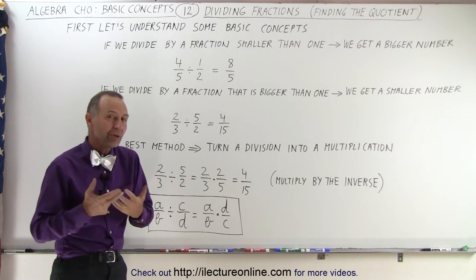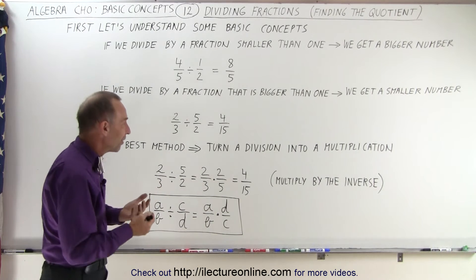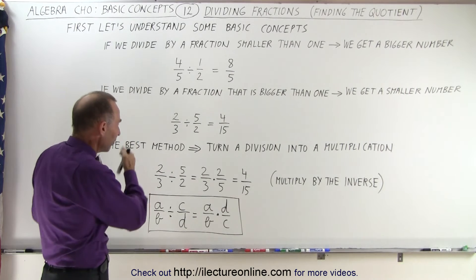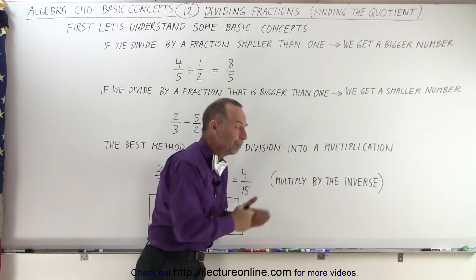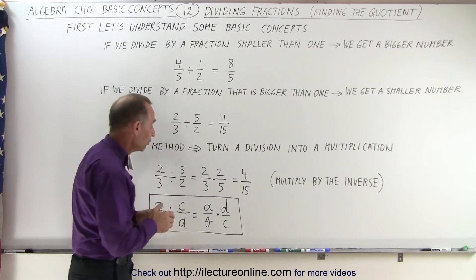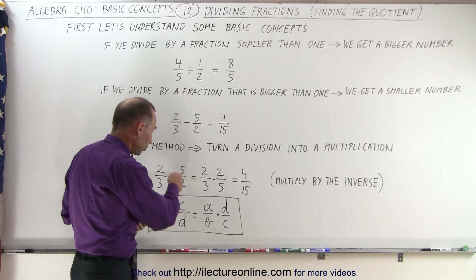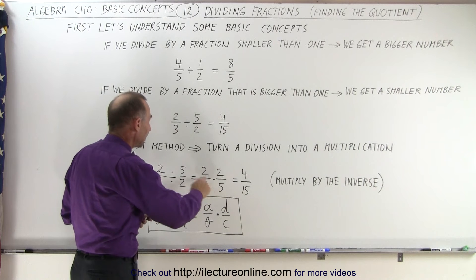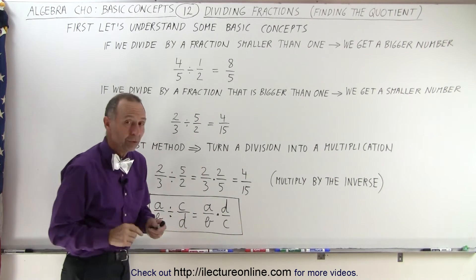It turns out when we divide one fraction by another fraction, the way that's done is by actually turning the division into a multiplication. And the way we do that is by taking the second fraction, the fraction we're dividing by, and turning that upside down and then making the division symbol a multiplication symbol.